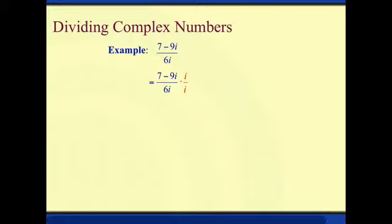Now if we multiply this out and distribute i to both the numerator and the denominator, we'll have 7i minus 9i squared all over 6i squared. Now notice that we have a lot of i squared that we can simplify. And we know that i squared is equal to negative 1.